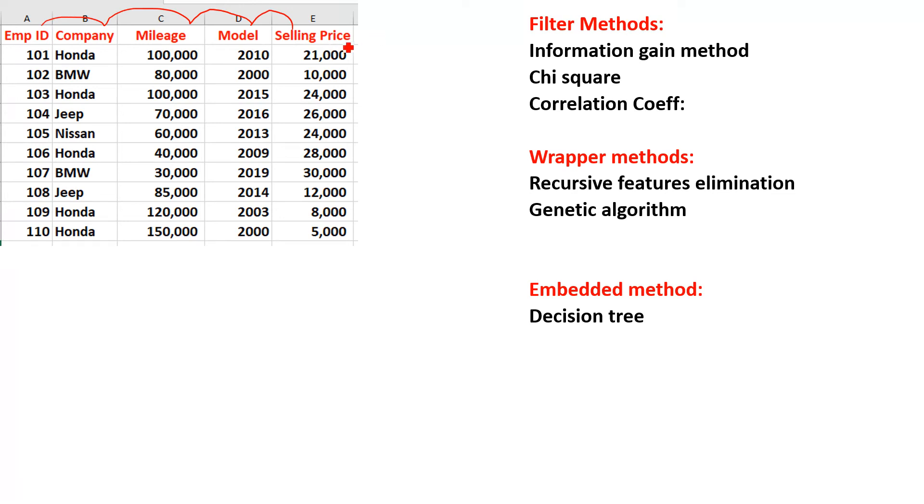We can say that selling price is our target attribute or dependent variable, while others are called independent variables, features, or attributes. Here I have only five features, but sometimes in practical life we can have thousands of attributes. If we give all these attributes to our training data, the model we get will not be accurate. But we want our model as accurate as possible in machine learning.